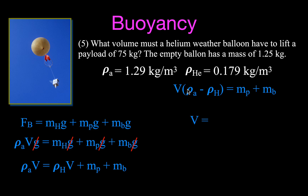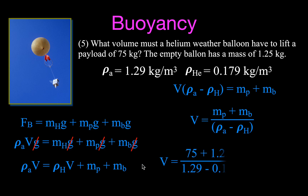Solving for the volume: V = (mass of payload + mass of balloon) ÷ (density of air − density of helium). Plugging in the given values, we get approximately 69 cubic meters. So at the surface of the Earth, a balloon needs a volume of about 69 m³ to lift itself, the helium inside it, and the 75 kg payload.